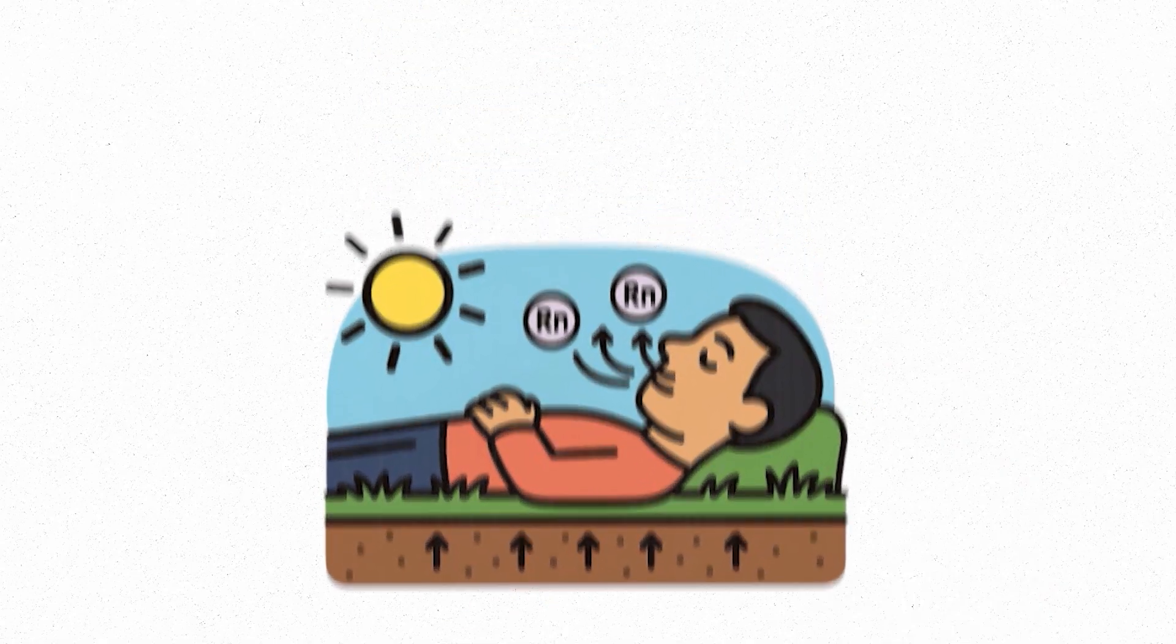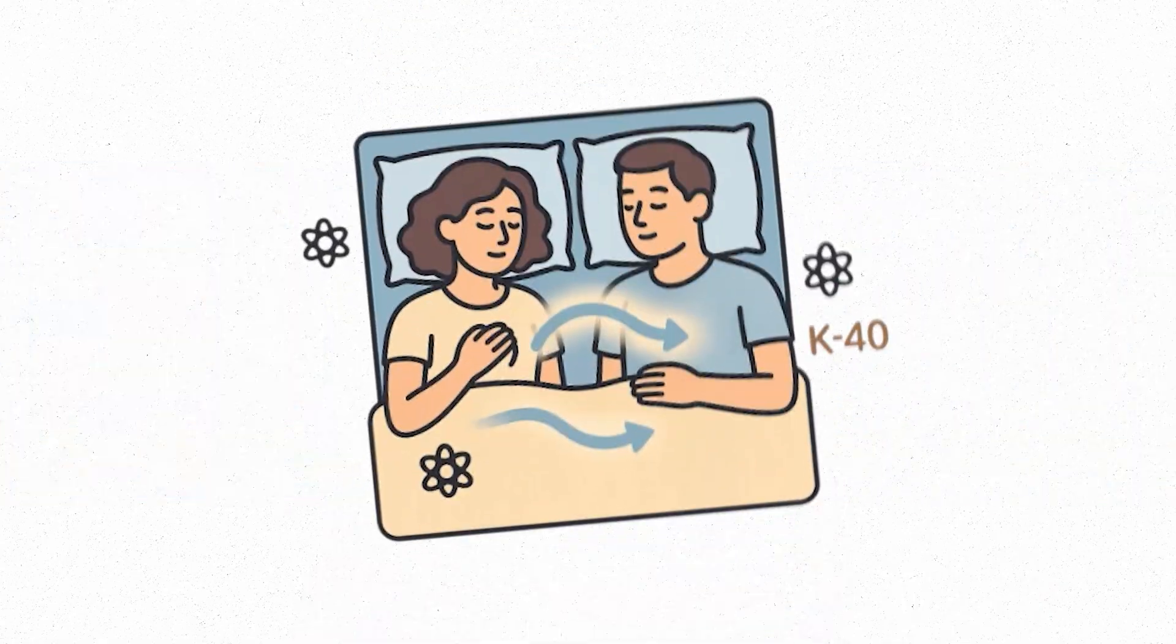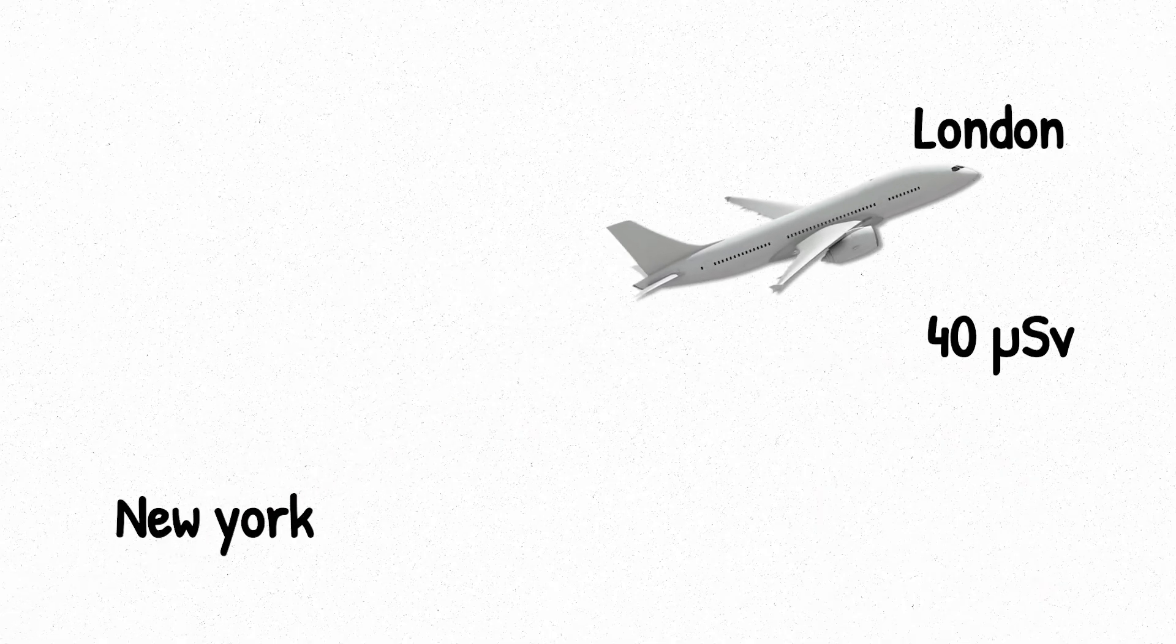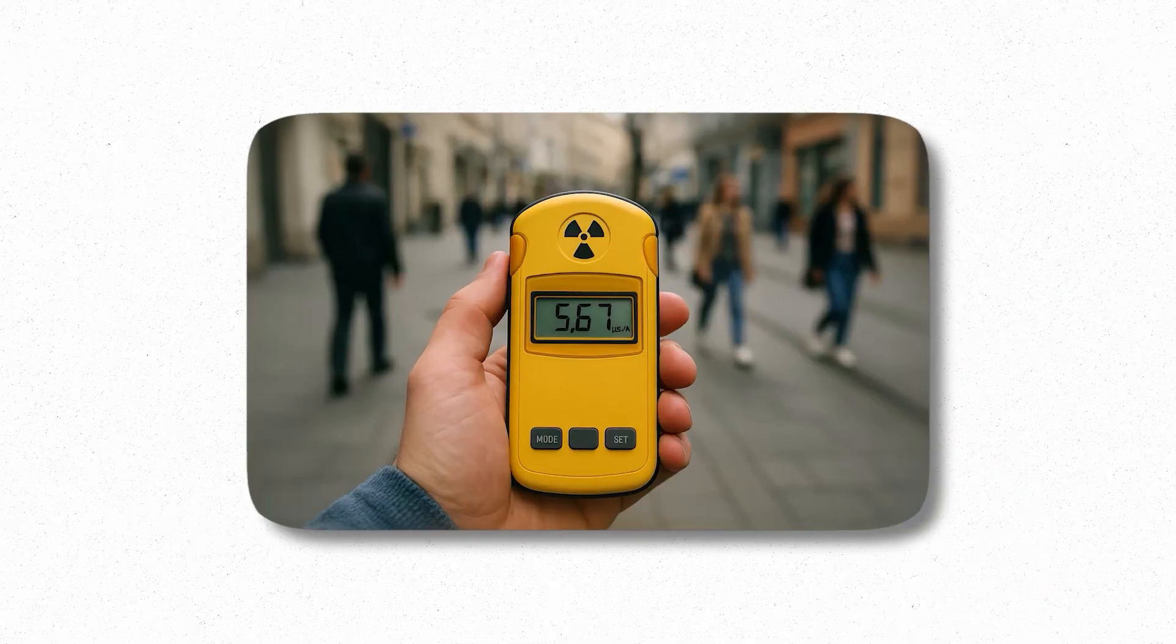To put it in perspective, lying on the grass under the sun, flying in a plane, or sleeping next to someone, all these expose you to tiny radiation doses. A flight from New York to London, for example, delivers about 40 microsieverts, roughly equivalent to a few days of background radiation all at once.